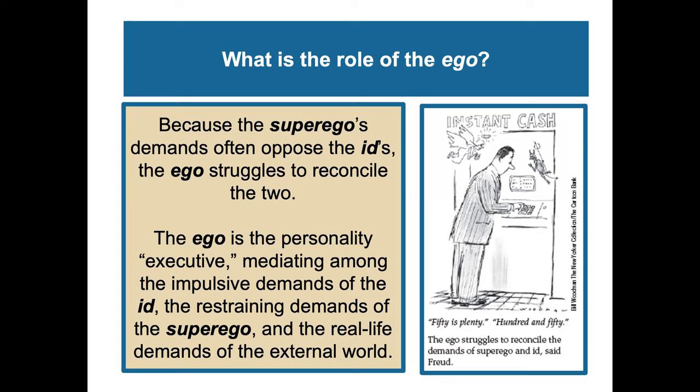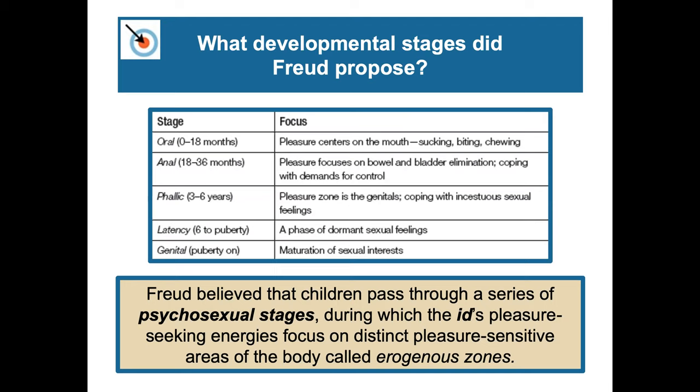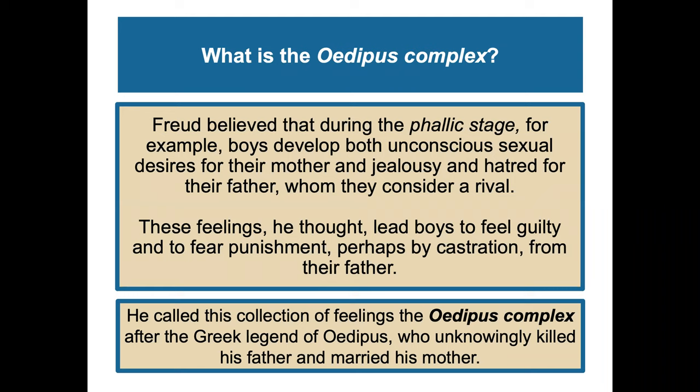Freud believed that children pass through a series of psychosexual stages during which the id's pleasure-seeking energies focus on distinct pleasure-sensitive areas of the body he called erogenous zones. These stages are: the oral stage, where pleasure centers around the mouth in early infancy; the anal stage, focusing on bowel and bladder elimination and coping with demands for control; the phallic stage, shifting focus to the genitals and coping with incestuous sexual feelings; then latency, a phase of dormant sexual feelings; and finally the genital stage, with maturation of sexual interests.